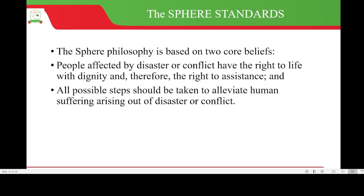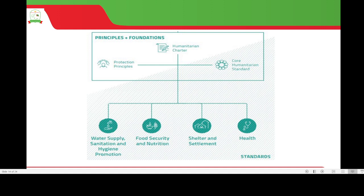The SPHERE standards are based on two core beliefs: one, people affected by disaster or conflict have the right to life with dignity and therefore the right to assistance; and two, all possible steps should be taken to alleviate human suffering arising out of disaster or conflict. The SPHERE standards have principles and foundations combined — including the protection principles, the core humanitarian charter, and the core humanitarian standard — working together to achieve water supply, sanitation and hygiene promotion, food security and nutrition, shelter and settlement, and health.